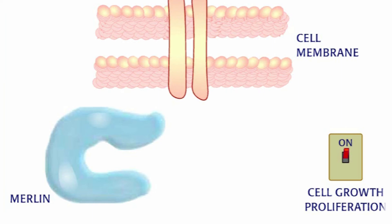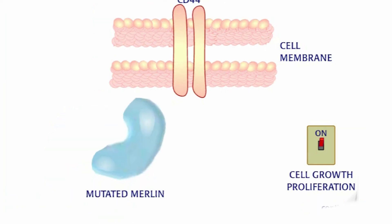If Merlin is mutated or absent, as in the case for people with NF2, cell growth and proliferation is uncontrolled. Thus, Merlin is a tumor suppressor protein.